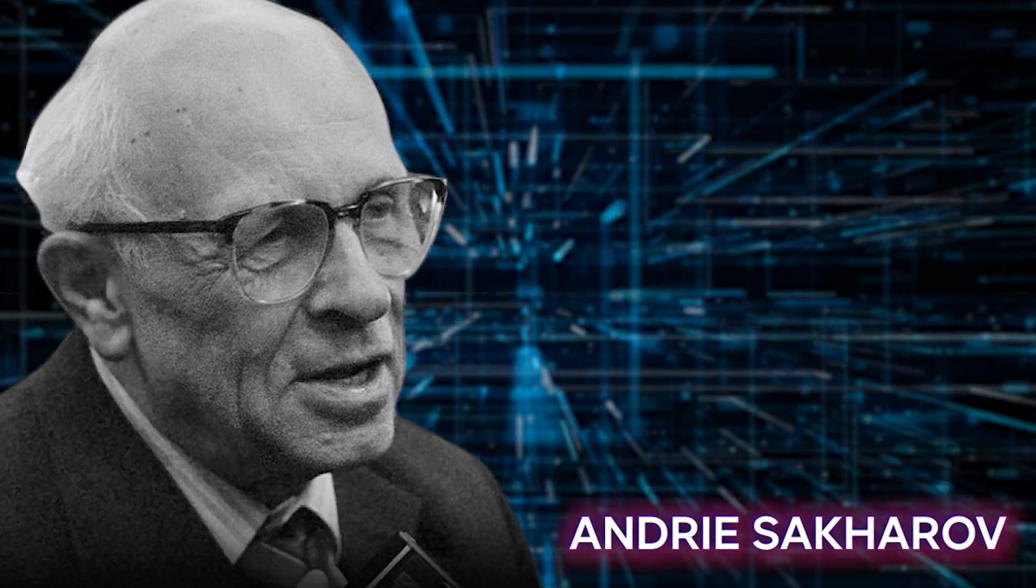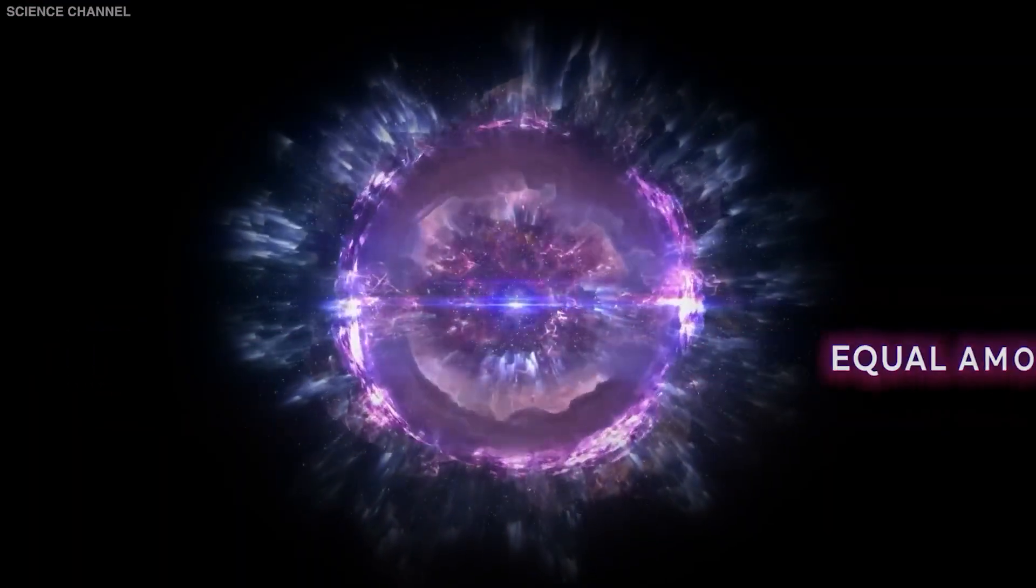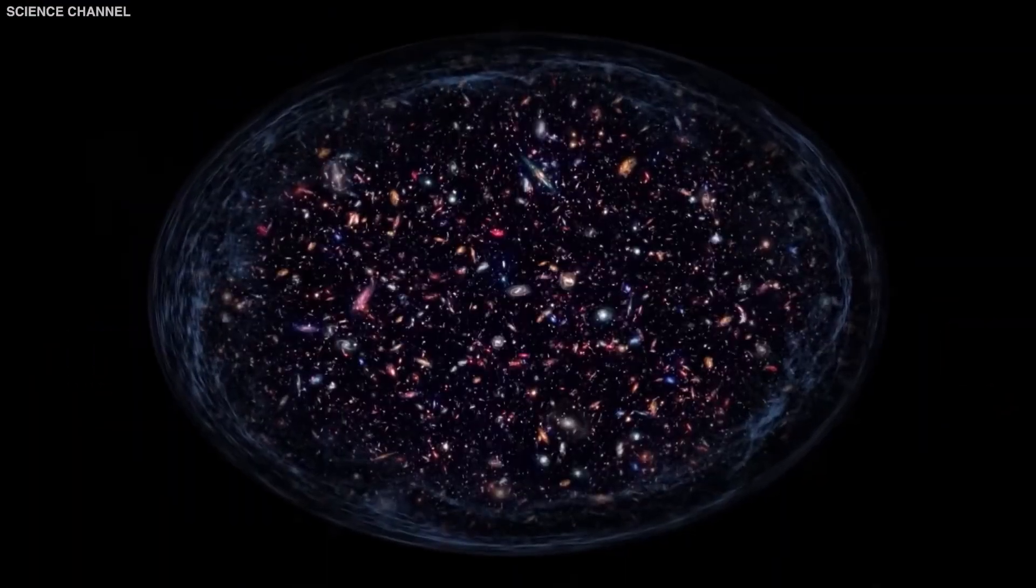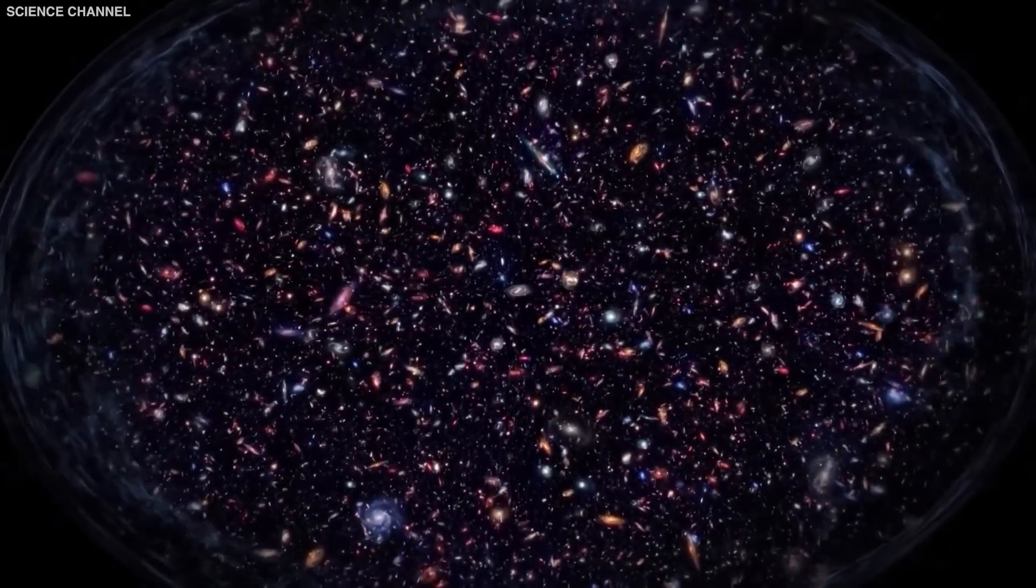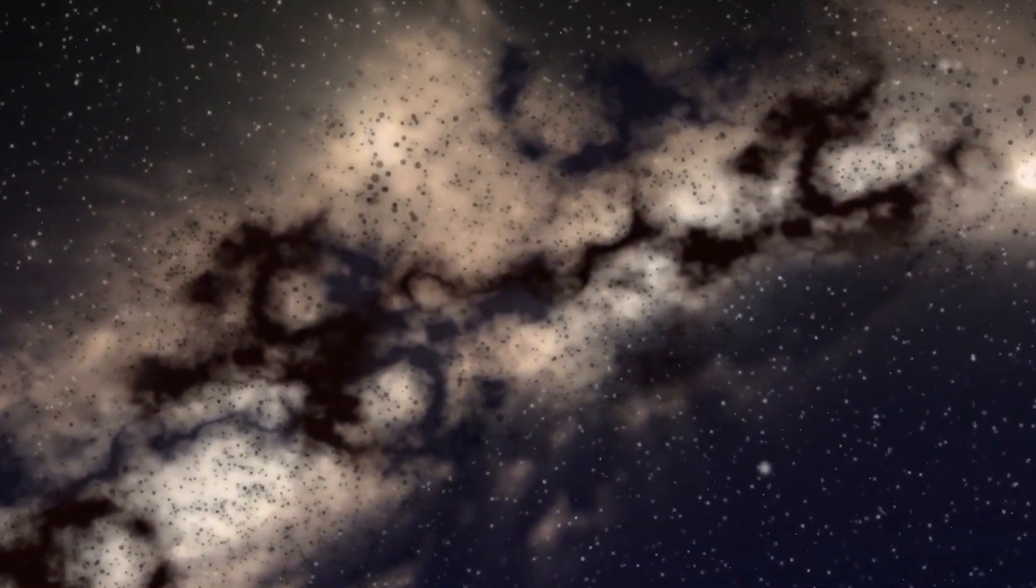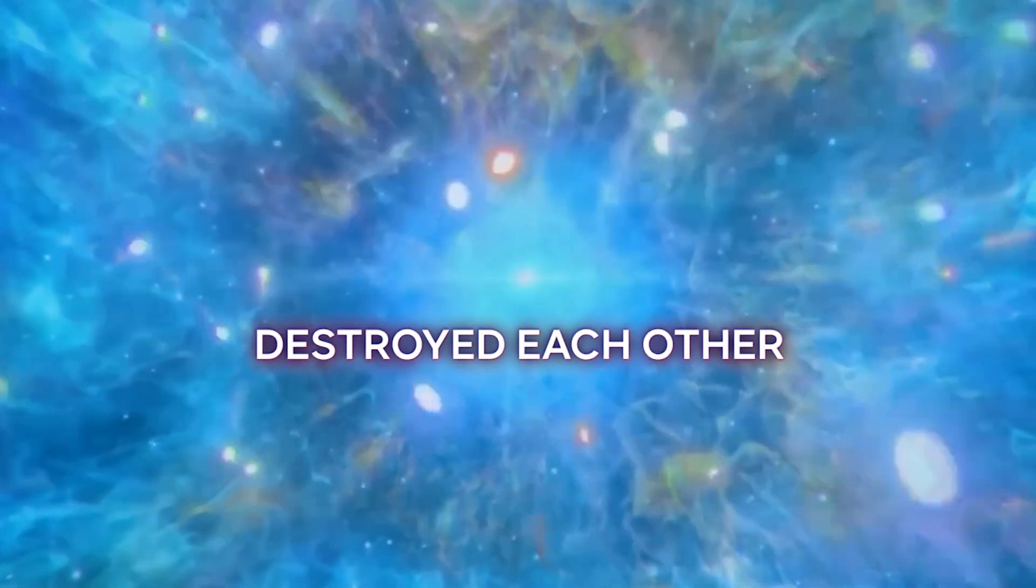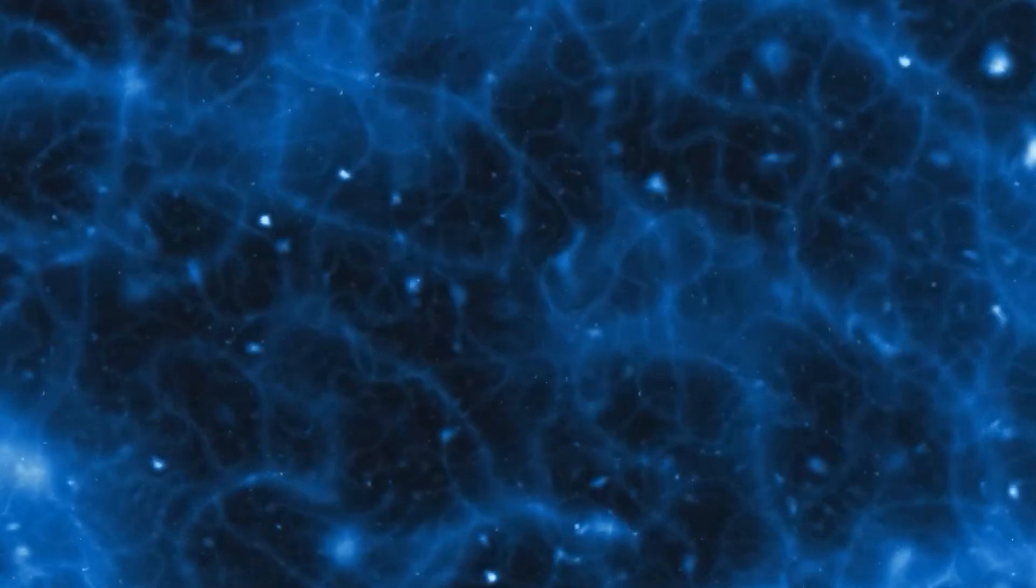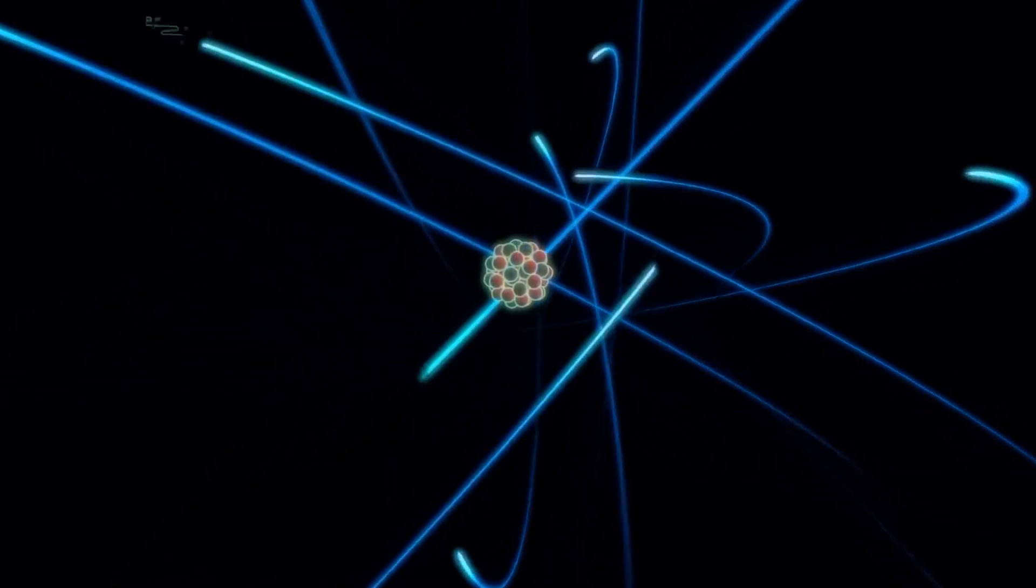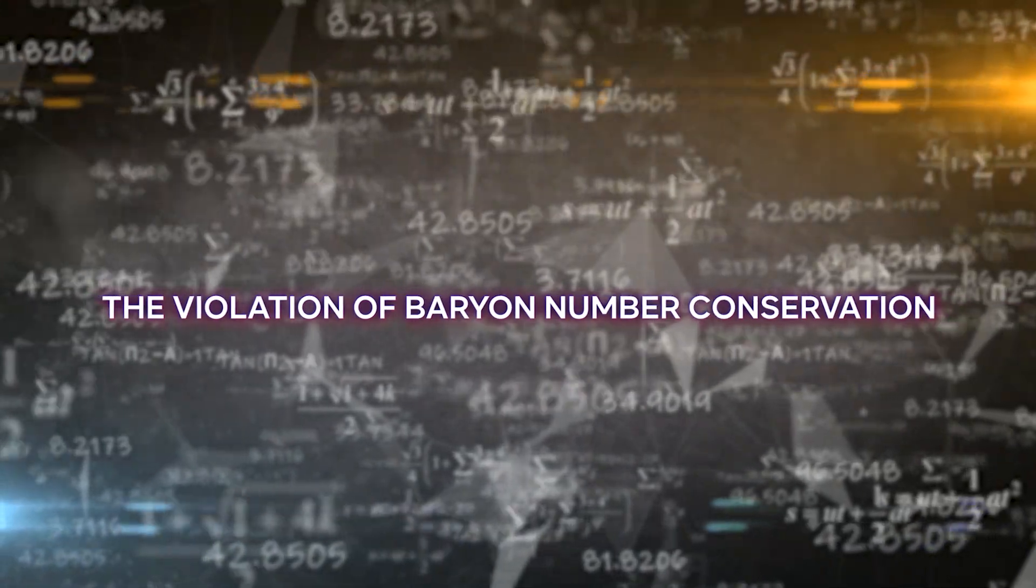One possible explanation for the matter-antimatter asymmetry is based on a theoretical framework proposed by physicist Andrei Sakharov over half a century ago. According to this framework, the universe began with equal amounts of matter and antimatter created during the Big Bang. In the moments after the Big Bang, the universe was an intense mix of particles, antiparticles, and radiation. Particles and antiparticles destroyed each other, giving birth to energetic photons. As the universe expanded and cooled, photons could no longer create particle-antiparticle pairs. This set the stage for a unique phenomenon, the violation of baryon number conservation.